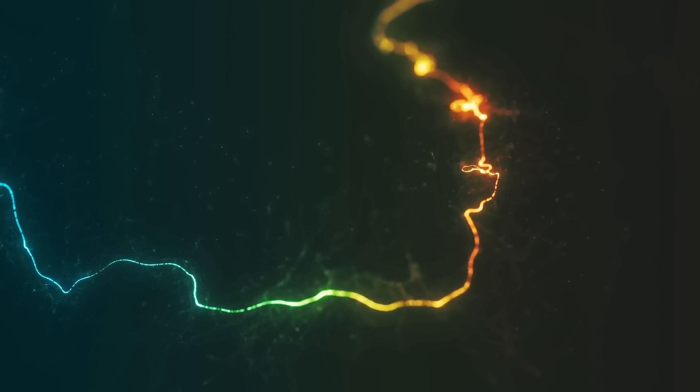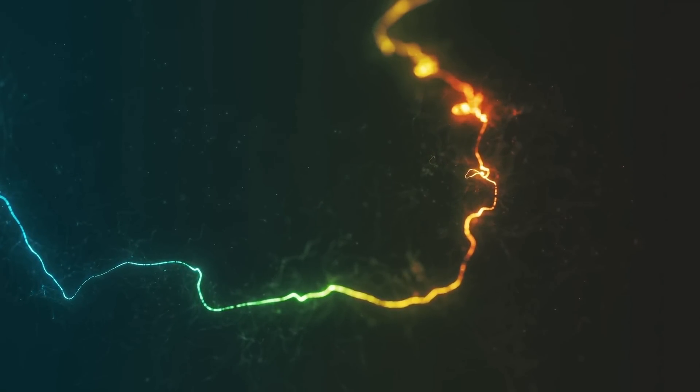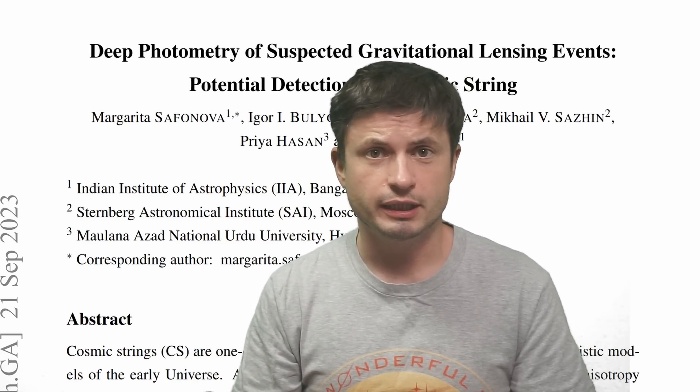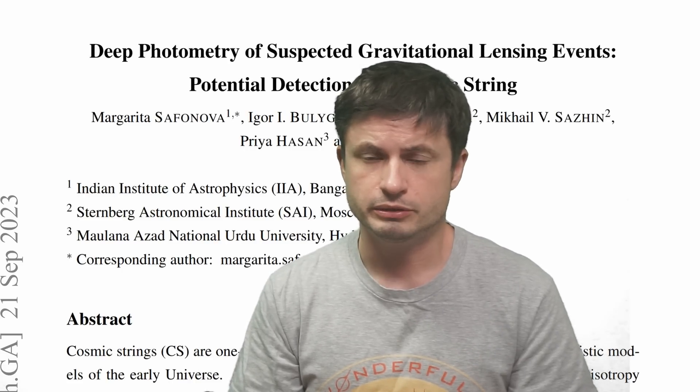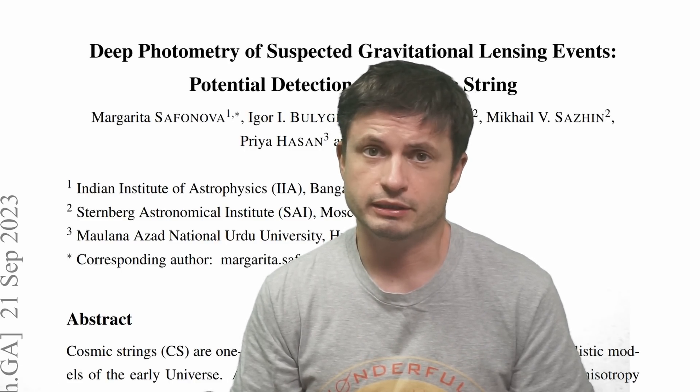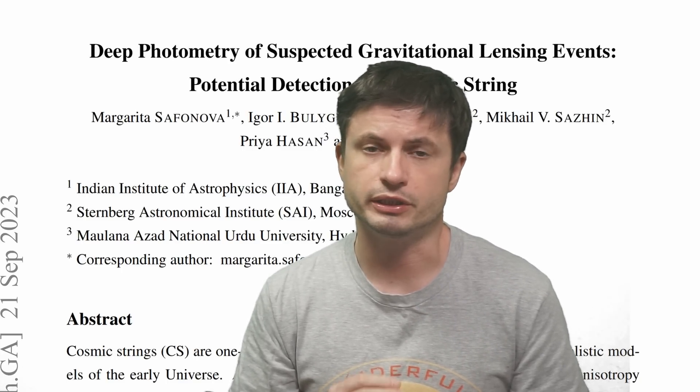Despite all of these predictions, cosmic strings have never really been officially observed. One obvious reason is that they would be extremely thin and very difficult to observe — the only way to detect them would be through strange gravitational effects in their vicinity. In the last few years, we've discussed at least a few cases where a potential discovery has been made. In this video, we're going to discuss yet another potential discovery described in a paper that suggests we might have found another sign of a cosmic string.